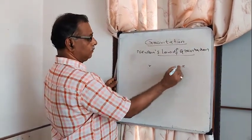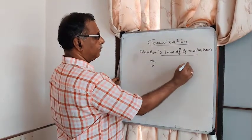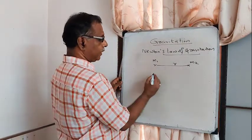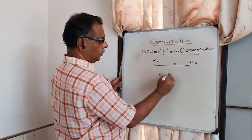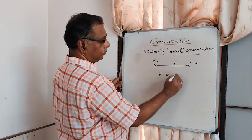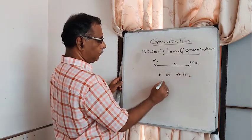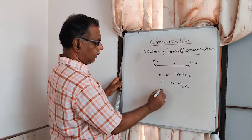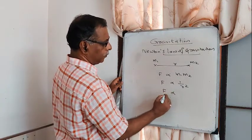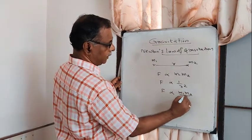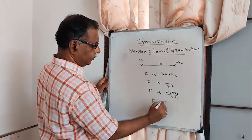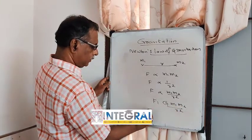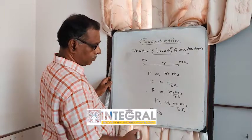Consider two masses M1 and M2 separated by a distance R. The force of attraction between M1 and M2 is directly proportional to the product of their masses, and inversely proportional to the square of the distance between them. Therefore F is proportional to M1·M2 / R², or F = G·M1·M2 / R². G is called the Universal Gravitational Constant.